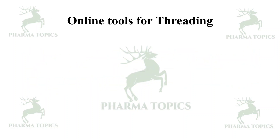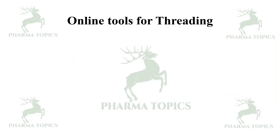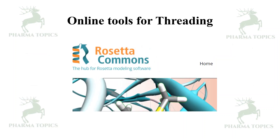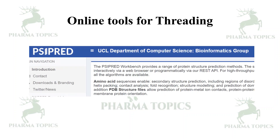Online tools for threading include: Modeler, which can be used for threading as well as homology modeling; Rosetta, a very famous program also used for homology modeling that is free for academic use; I-TASSER, a protein structure and function predictor where you can register and perform both homology modeling and threading; and CYPred, a workbench providing a range of protein structure prediction methods that interacts with web servers by high-throughput mechanisms with all algorithms available — it is very widely used.